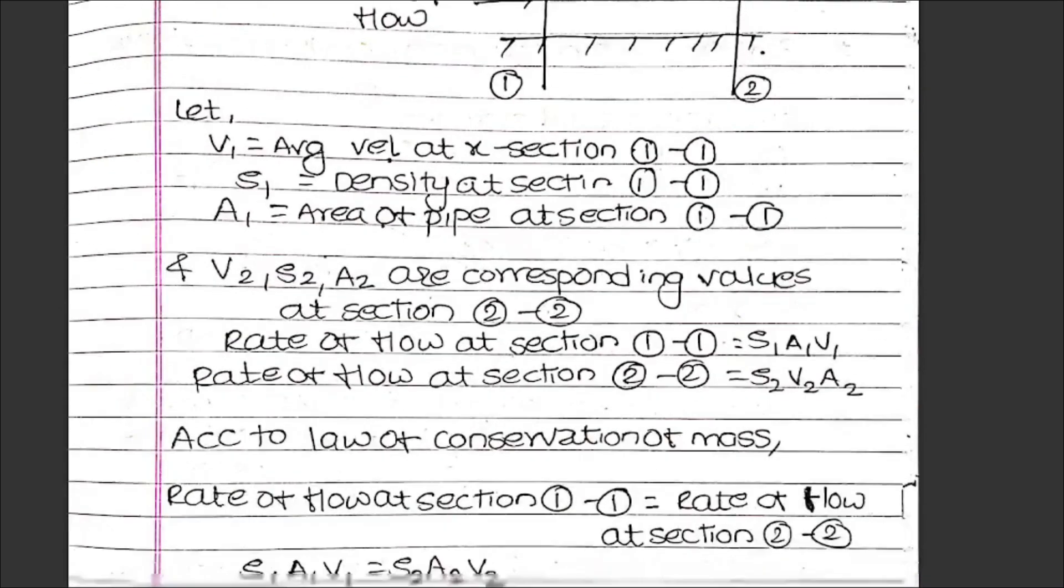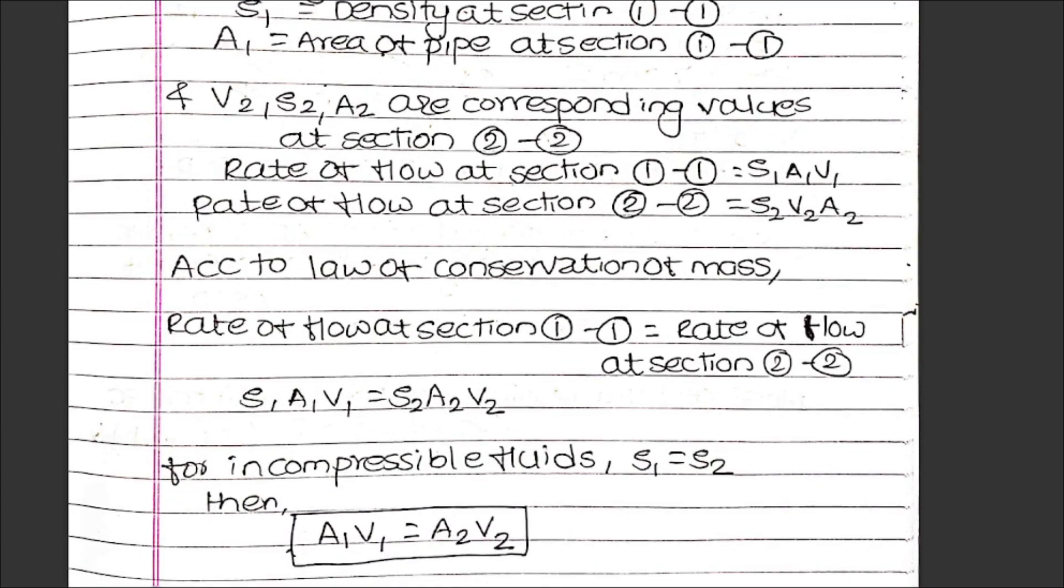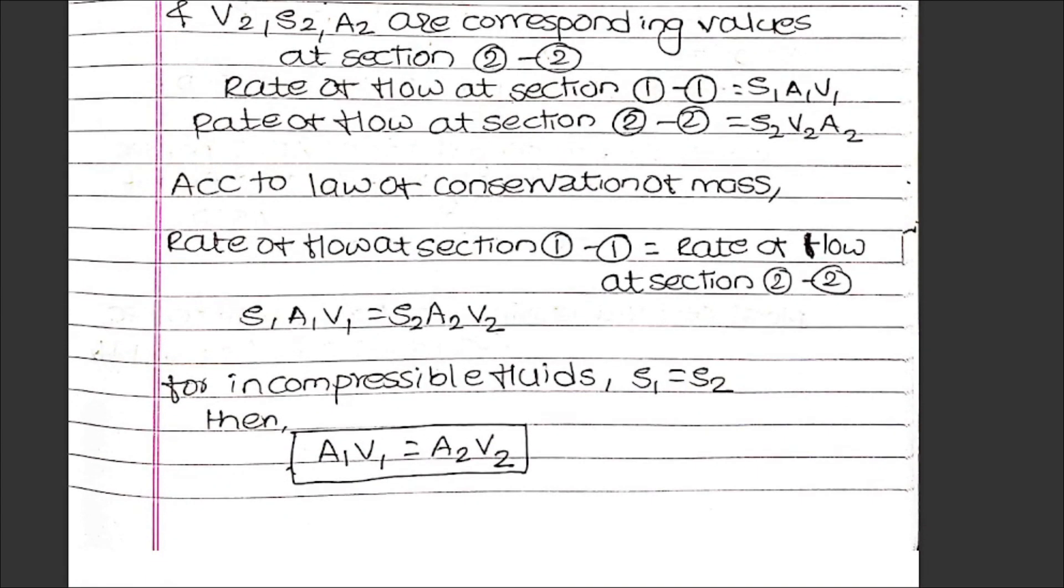Rate of flow at section 1 is ρ₁A₁V₁, and at section 2 is ρ₂A₂V₂. According to the law of conservation of mass, rate of flow is constant, so ρ₁A₁V₁ equals ρ₂A₂V₂.